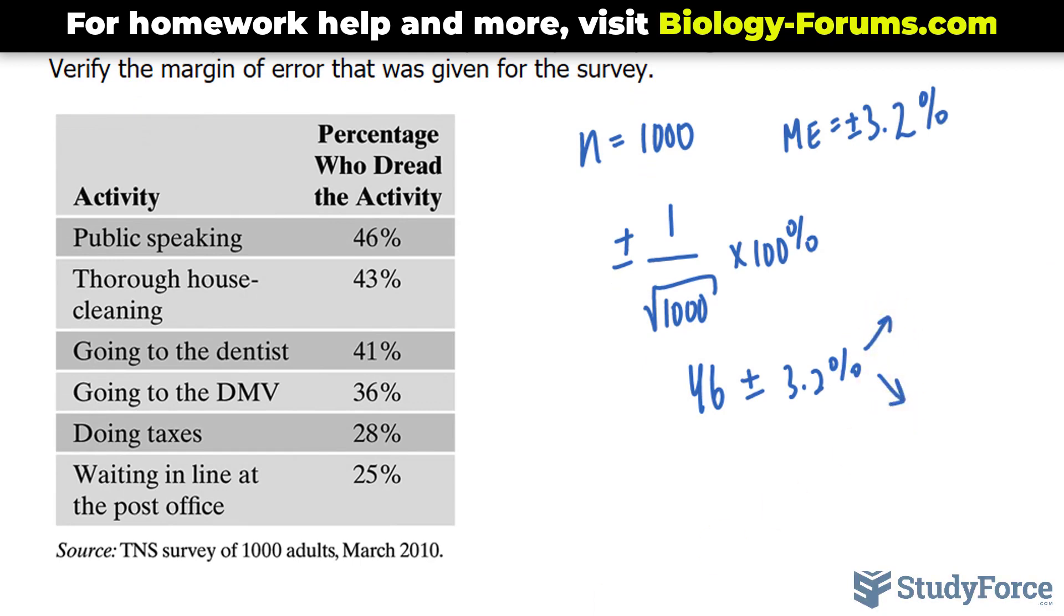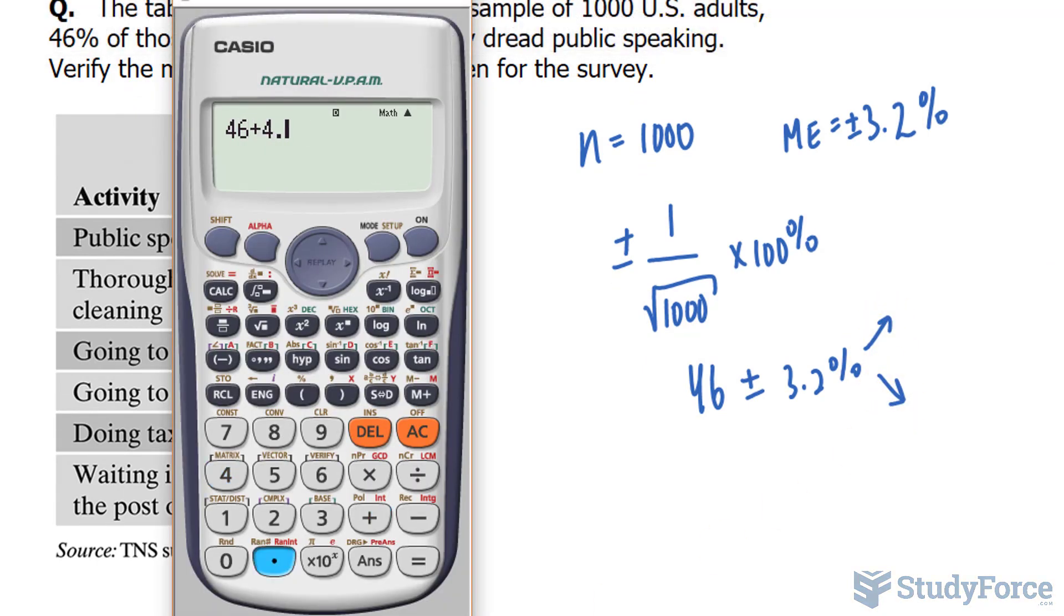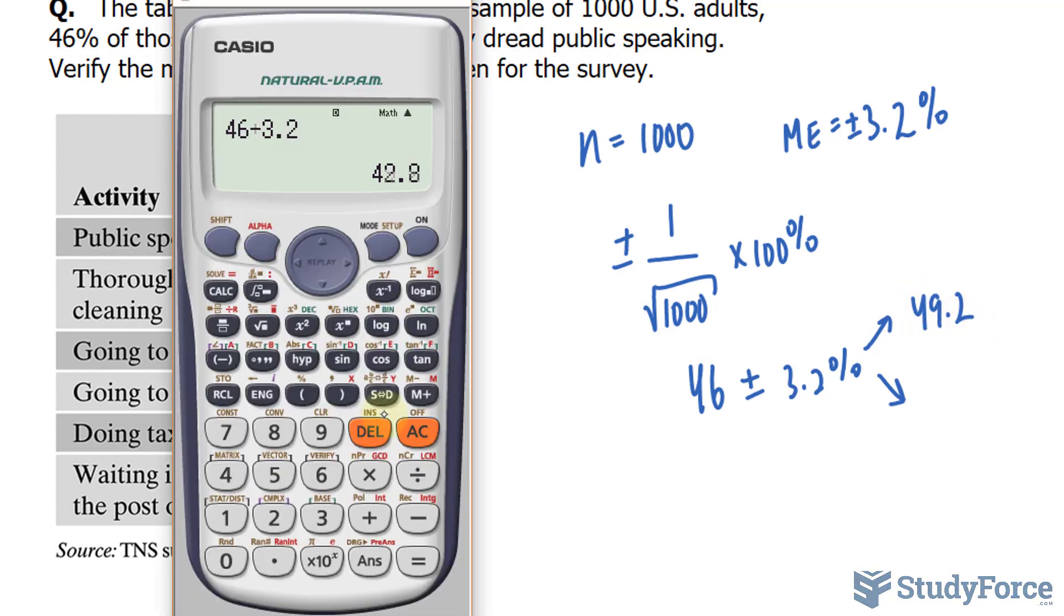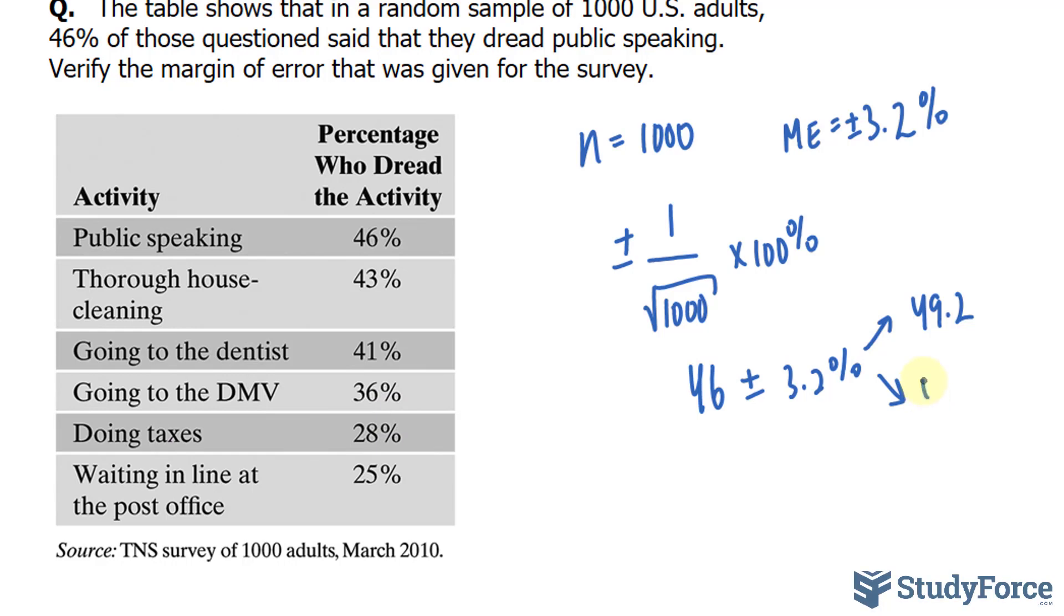If we add them, we get 46 plus 3.2, 49.2. And if we subtract them, we get 42.8.